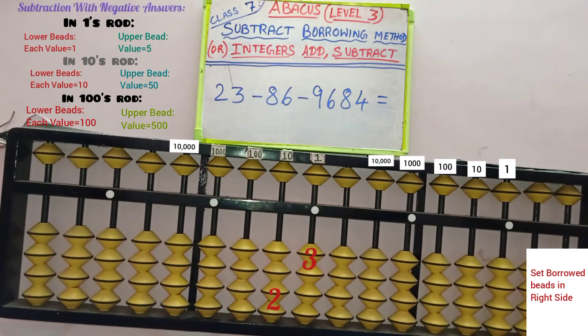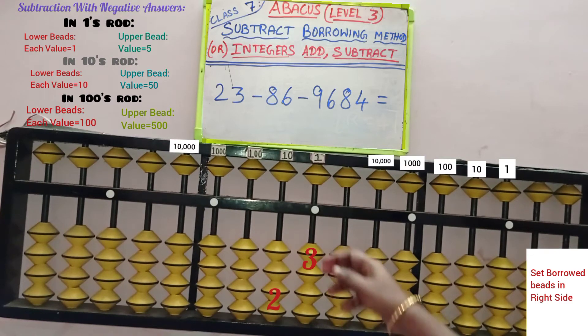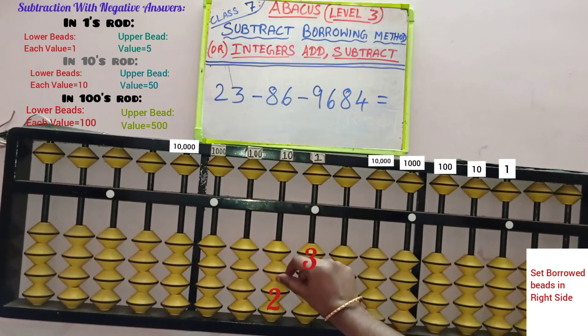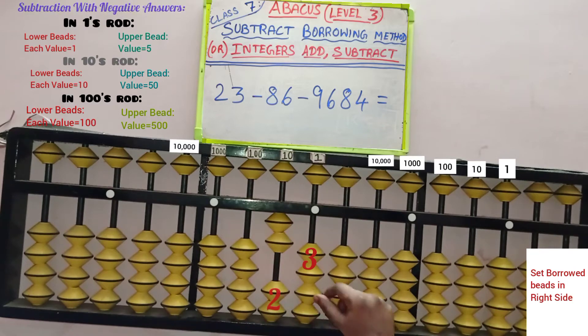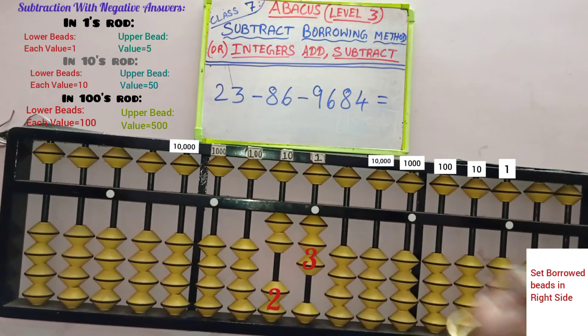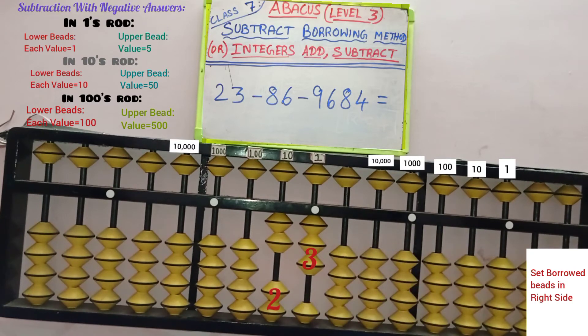First, set 23 in a row. 3 is in the 1's place and 2 is in the 10's place. So set 2 beads in the 10's row and 3 beads in the 1's row. 23 is added.